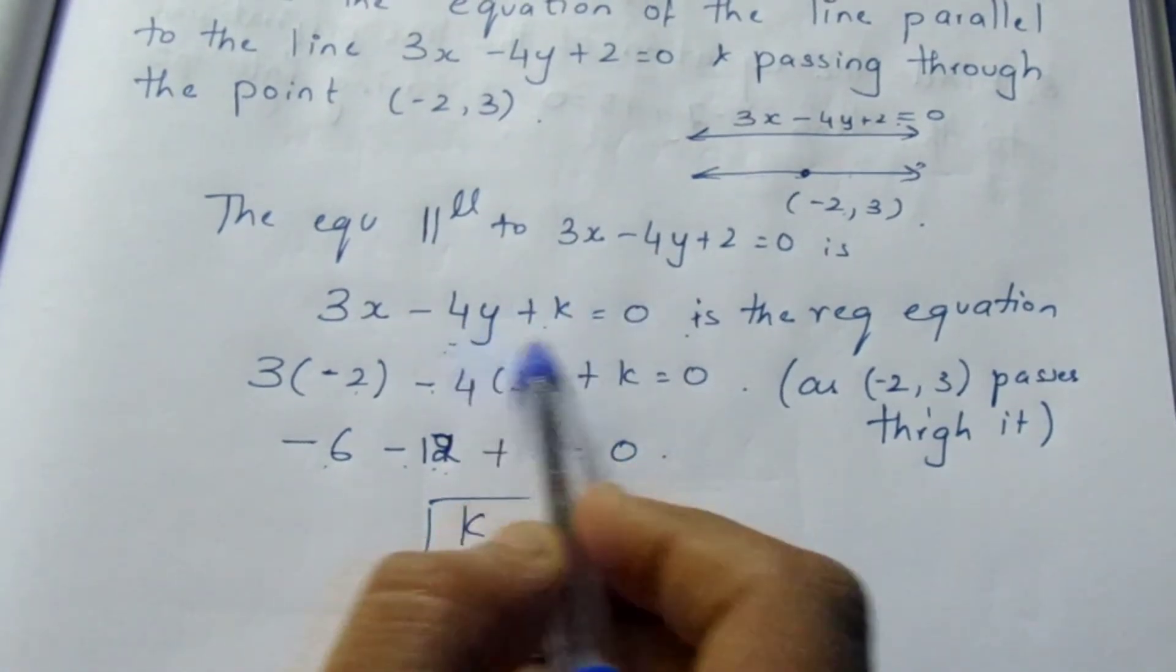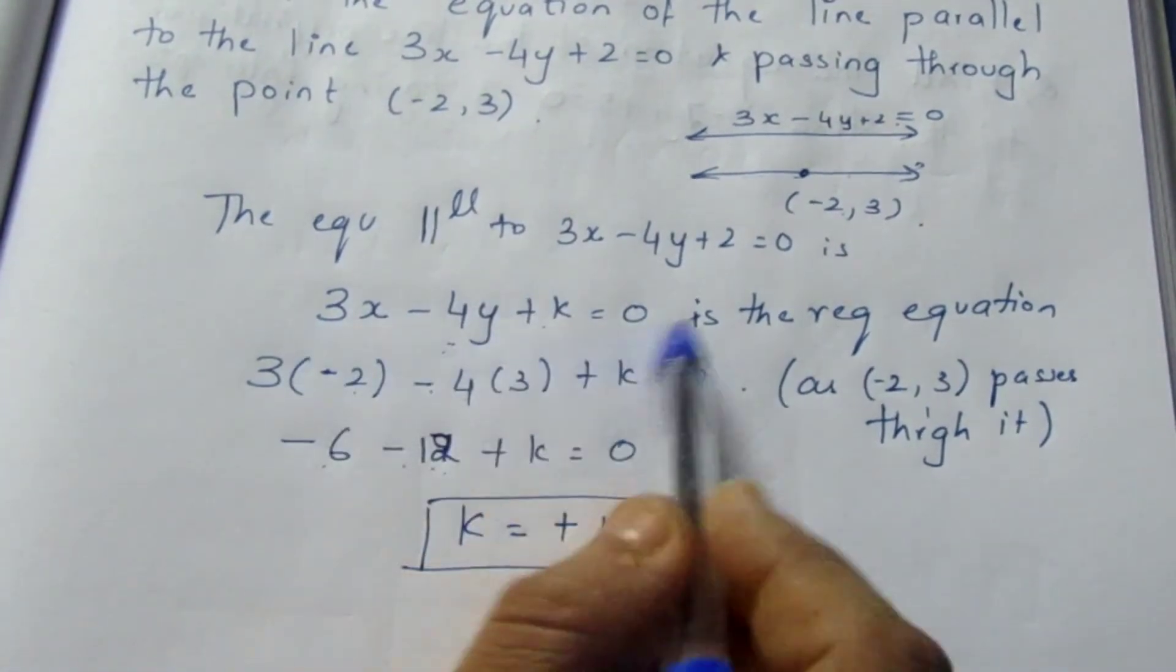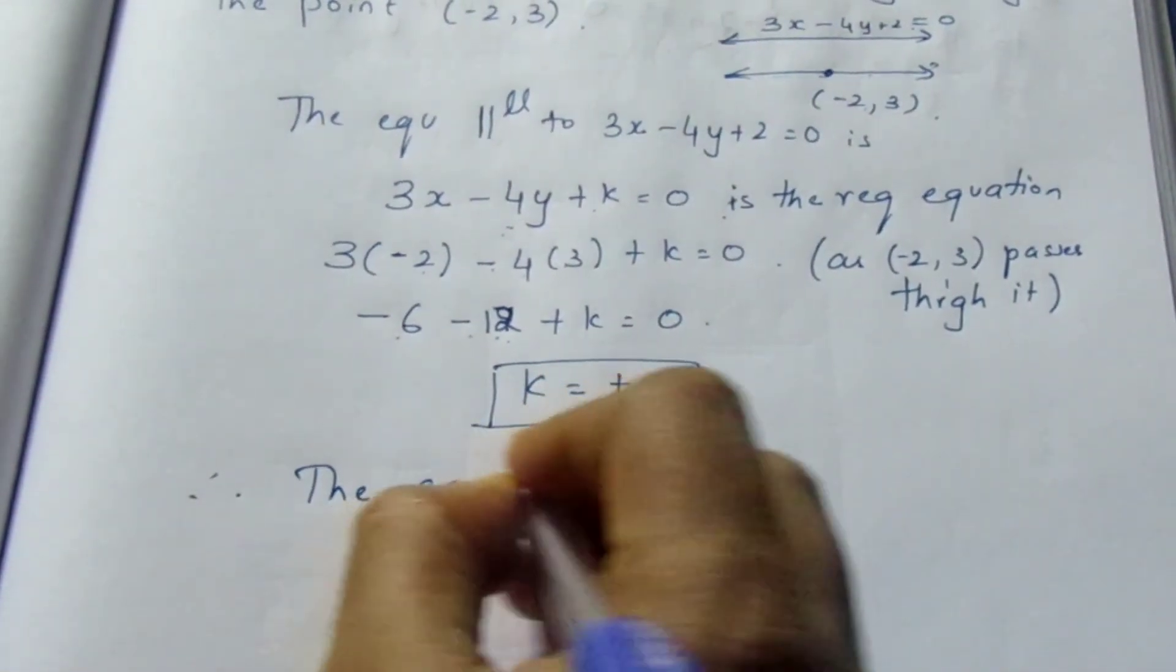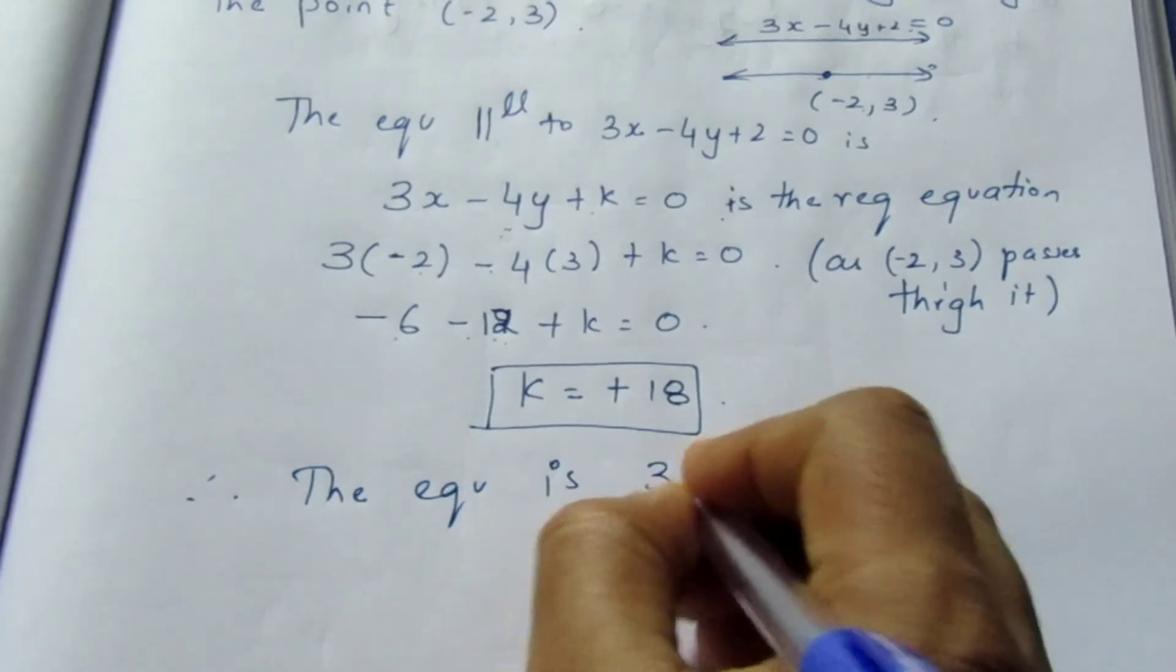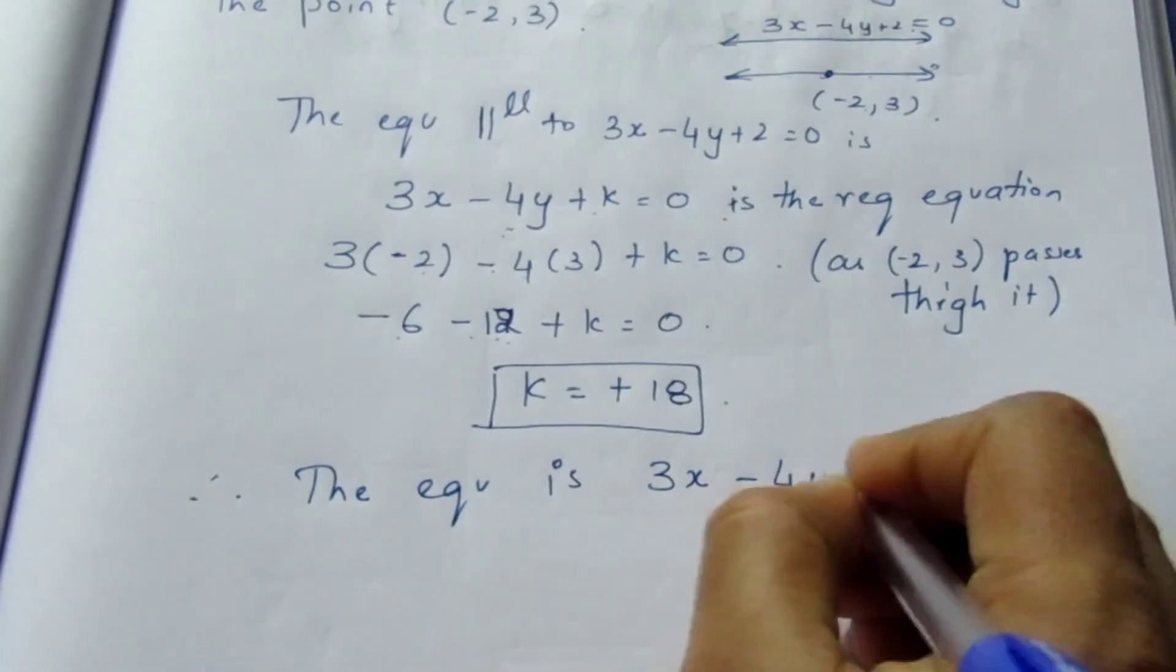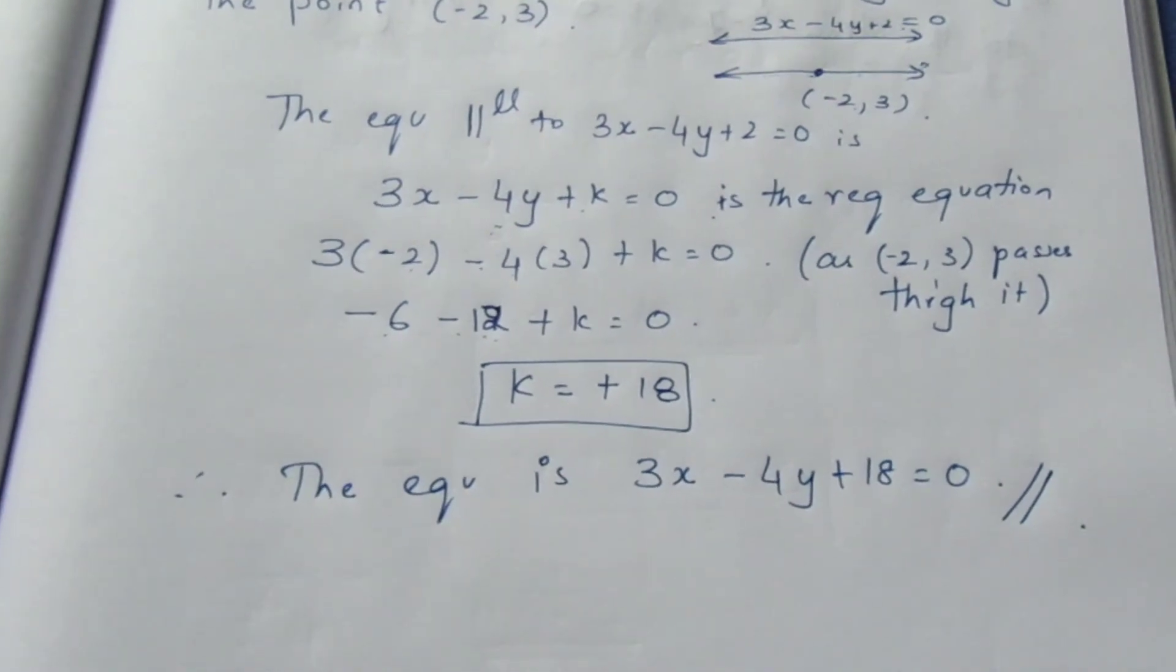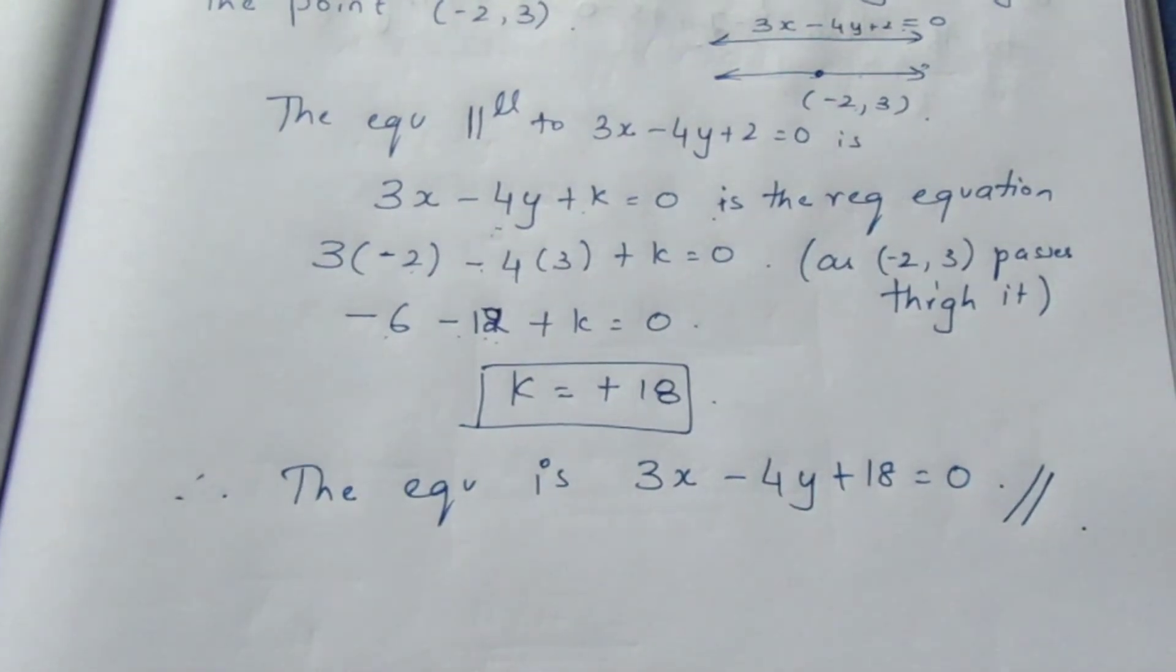Just substitute the value in the required equation. So therefore, the equation is 3x minus 4y plus 18 equal to 0 is your final answer for this sum. That's all with the sum. Thank you.